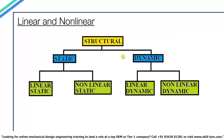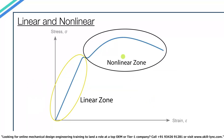Both static and dynamic analysis have two subtypes: linear and nonlinear. In linear analysis, a linear relationship between stress and strain is assumed throughout the simulation. However, once a material crosses its yield strength, its stiffness starts changing. Linear analysis obeys Hooke's law, where strain is proportional to stress applied. Deformations in linear analysis are relatively small, whereas in nonlinear analysis there can be large deformations not proportional to the applied load.